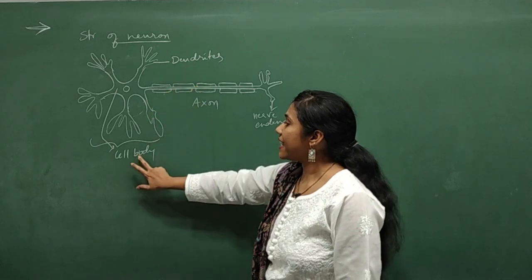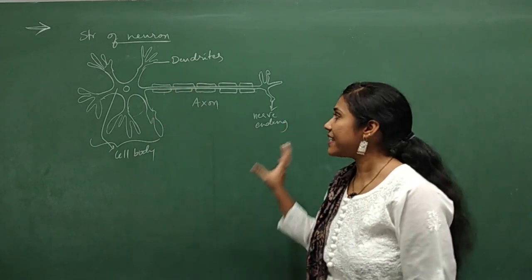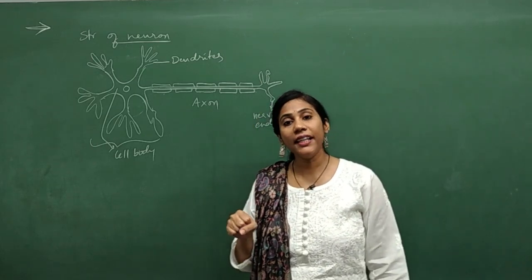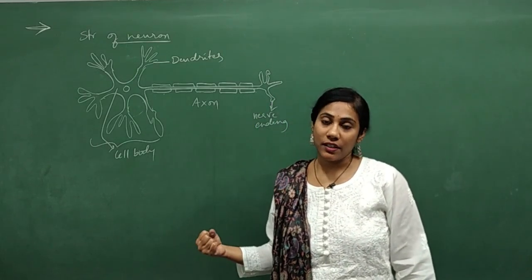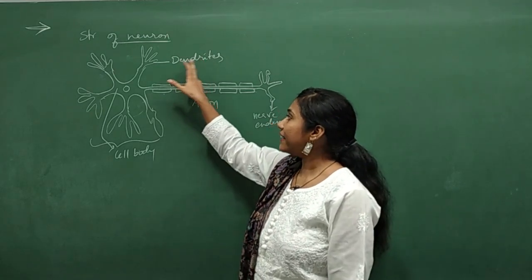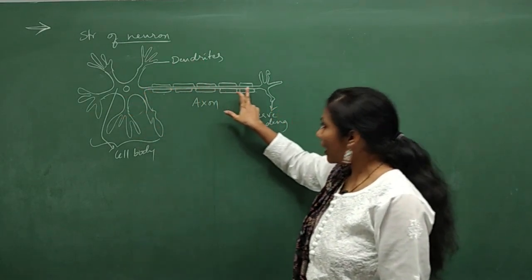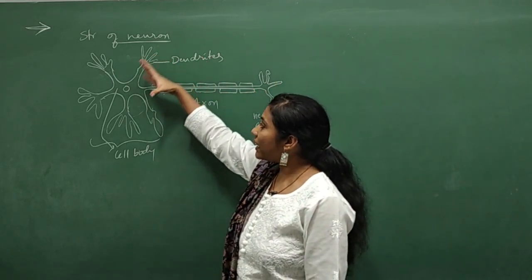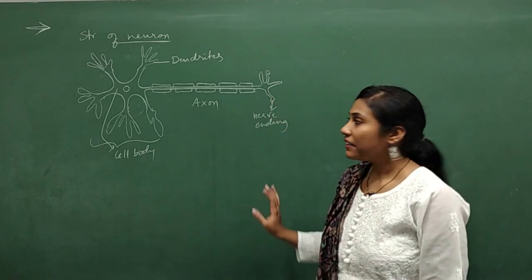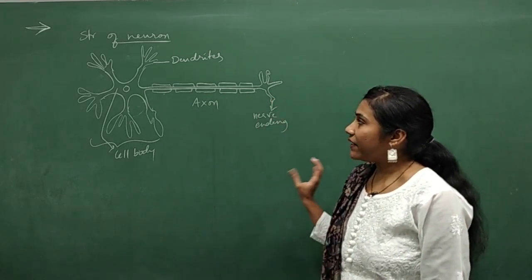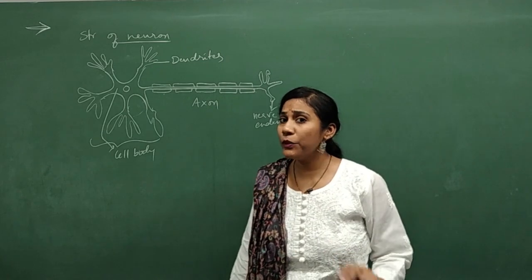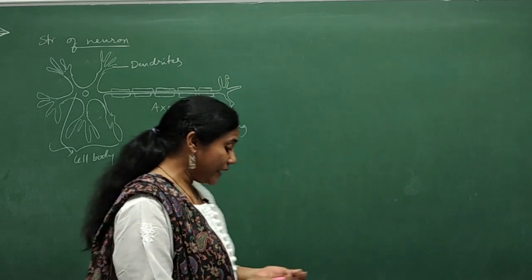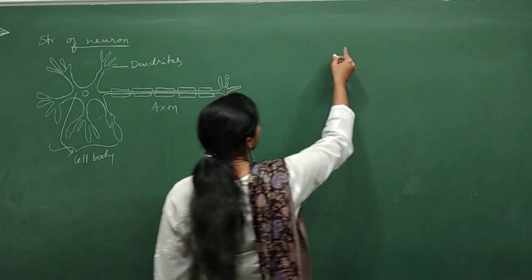Dendrites, cell body, and axon are the three important parts of the neuron. Dendrites receive the stimulus information, which passes through the axon to the nerve ending — this is how an electric impulse is transmitted through the neuron.